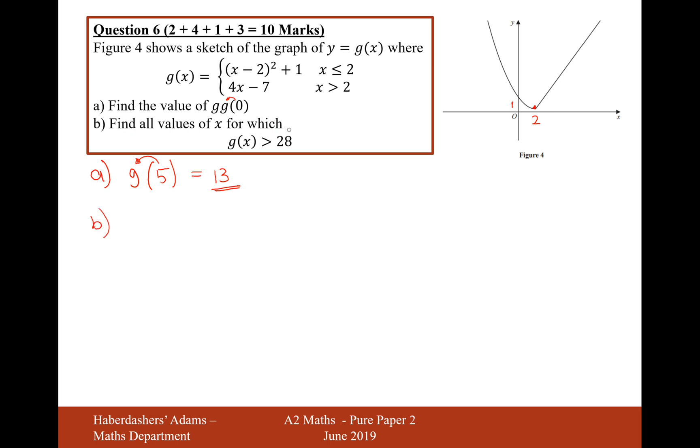Find all values of x for which g of x is greater than 28. So effectively, if I draw the line for y equals 28, it's going to happen at 2 points. It's going to happen at this point here and upwards, and it's going to happen at this point here and upwards. I need to do two equations on this, one for the right-hand side, one for the left-hand side. I'll do the left-hand side first.